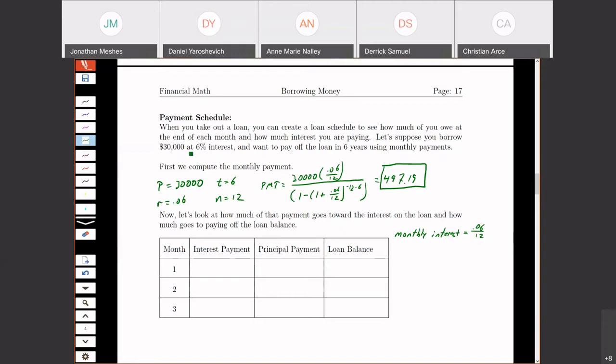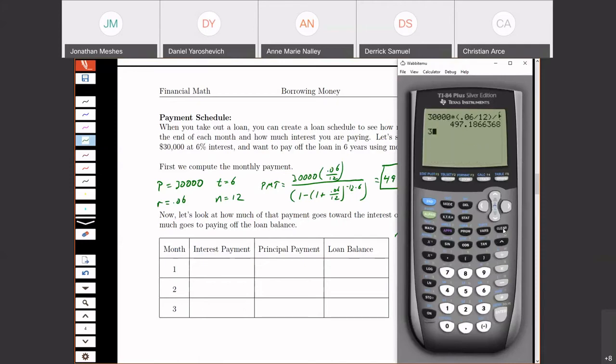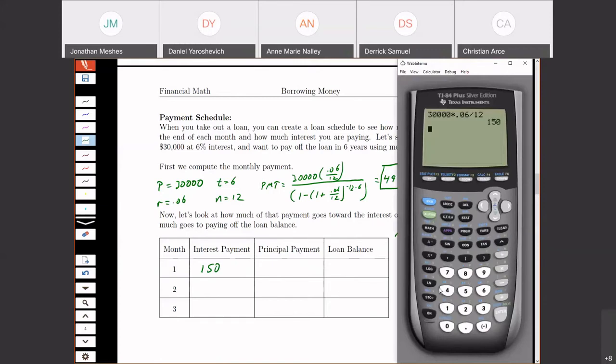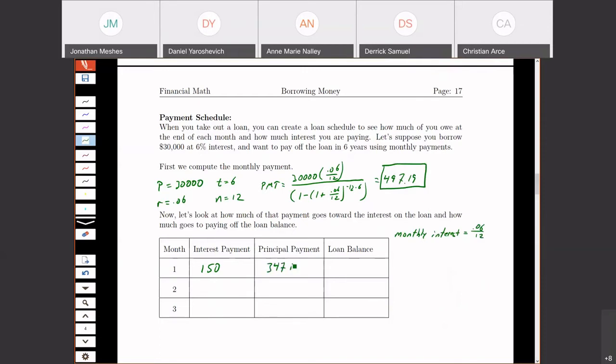So for the first month, the amount of interest that we get, I'm going to take my $30,000 and multiply it by 0.06 divided by 12. So I have $150 in interest. So when I make a payment, $150 of that goes to pay off the interest. Since I paid $497.19, $150 goes to interest, the rest goes to my principal to pay off how much I owe. So I'm going to take my $497.19 and subtract $150. So that $347.19 goes to my principal.